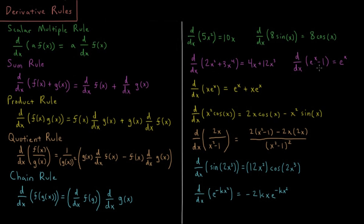The derivative of e to the x minus 1: the derivative of e to the x is itself e to the x, and the derivative of a constant, negative 1, is 0. So that's plus 0, which is just the same function e to the x.